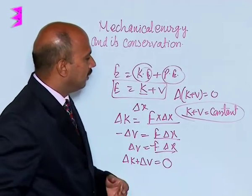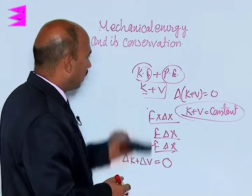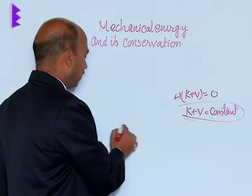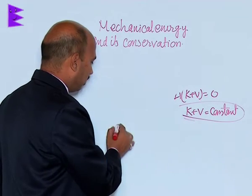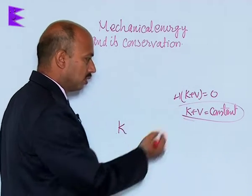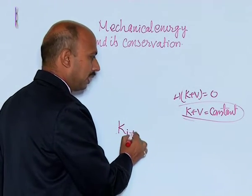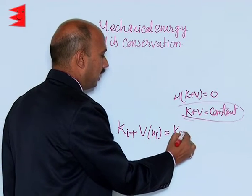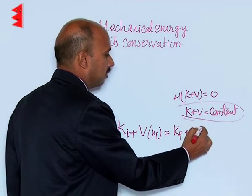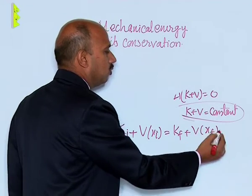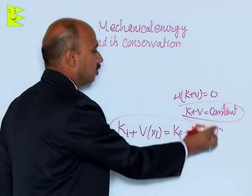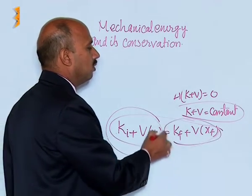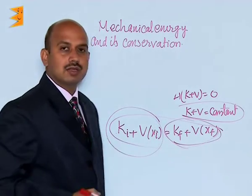Further, we can write the same equation as: K initial plus V initial equals K final plus V final. This gives us the result that the initial total mechanical energy is equal to the final total mechanical energy.